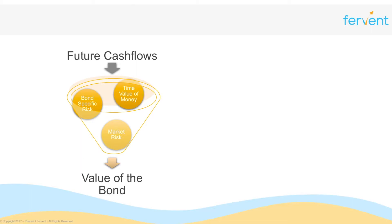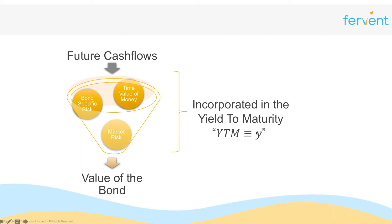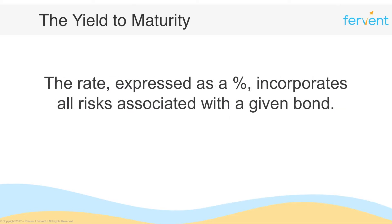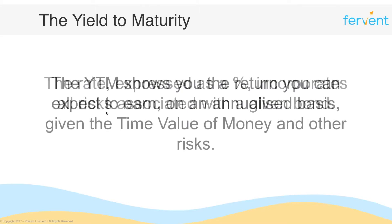When we learned about bond characteristics, the most important characteristic of all was the yield, or yield to maturity, because all of these risks are incorporated in the yield to maturity — also known as YTM or simply Y. The YTM is the crucial ingredient for discounting future cash flows to estimate the value of a bond. The rate is expressed as a percentage and incorporates all risks associated with a given bond. The other side of the coin is return — the YTM shows you the return you can expect to earn on an annualised, semi-annual, or quarterly basis, given the time value of money and other risks.